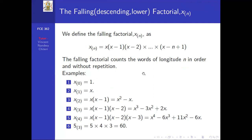Key beta function facts: B(m,n) = B(n,m), i.e., it is symmetric. Also, B(m,n) can be expressed in terms of gamma functions as Γ(m)·Γ(n)/Γ(m+n). Since gamma functions can be expressed in terms of factorials, the beta function can likewise be expressed in terms of factorials.